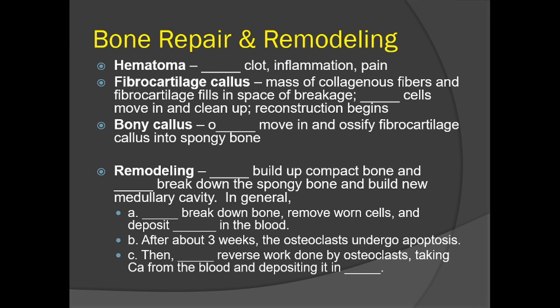How do bones repair themselves? And this is a good time to talk about remodeling as well. When a bone is damaged, a hematoma — a blood clot — forms first, associated with inflammation and pain, because nerve endings are stimulated by the release of chemicals and the increase of fluid putting pressure on them. Then a fibrocartilage callus forms — massive collagenous fibers and fibrocartilage fill in the space of breakage.